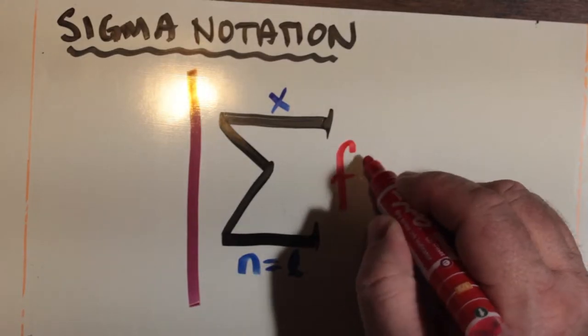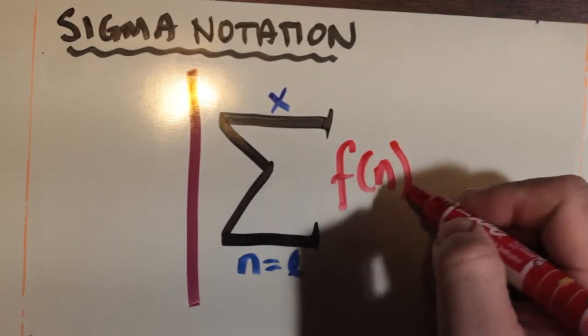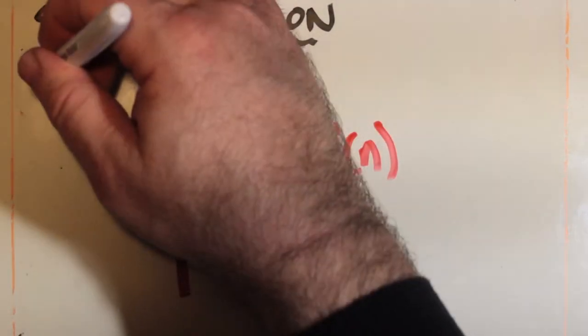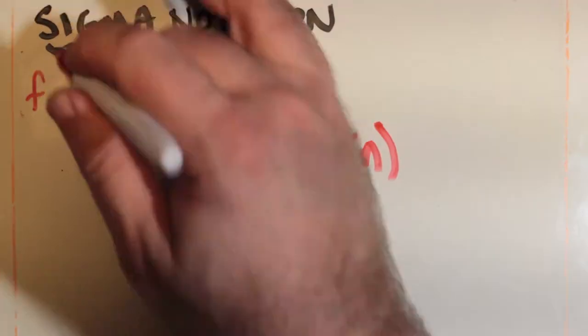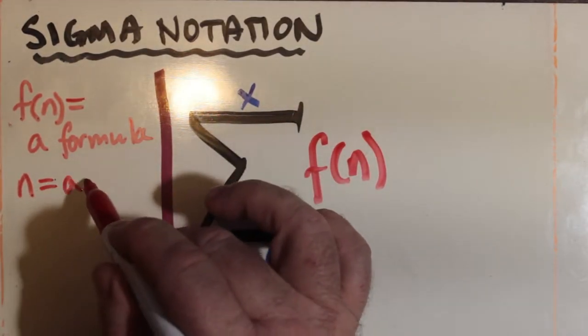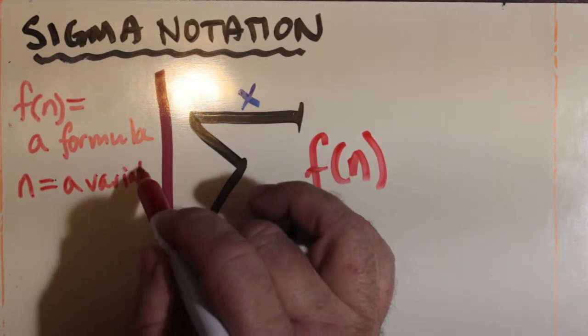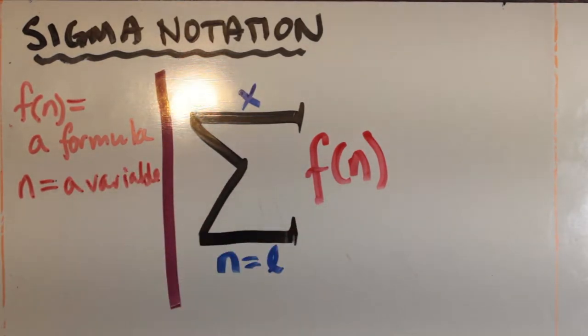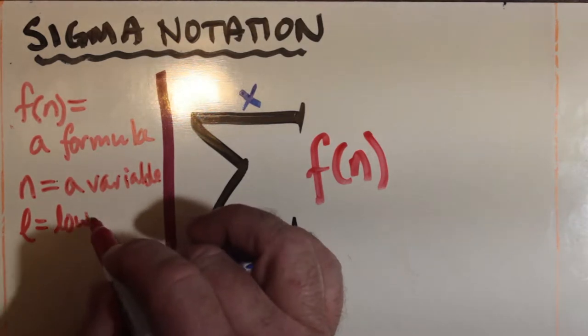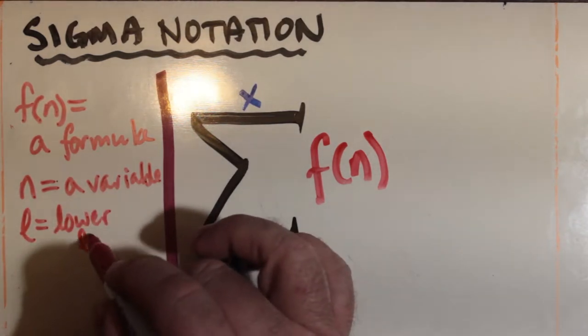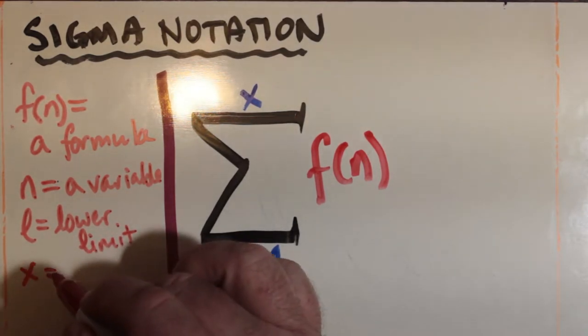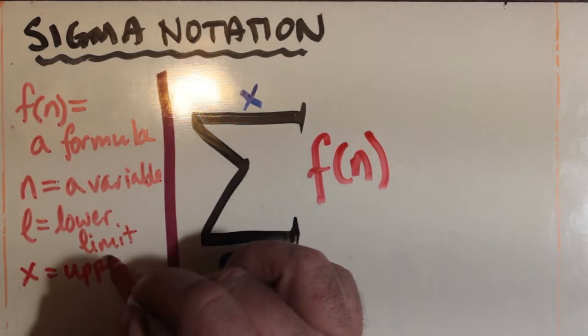Sigma notation is given by the capital letter sigma. Below the letter sigma is the lower limit of the summation, where the subscript begins. We're calling that n and l would be the lower limit. So n is really the variable used, it's the thing that changes. L is the lower limit, it's a constant, it's the lowest number that n can accept.